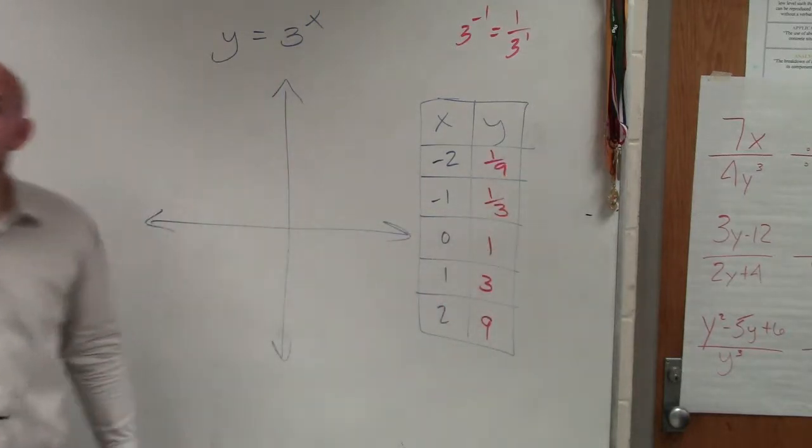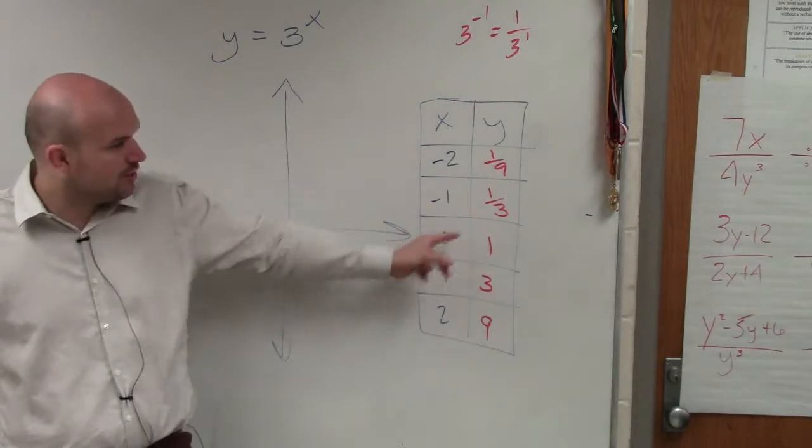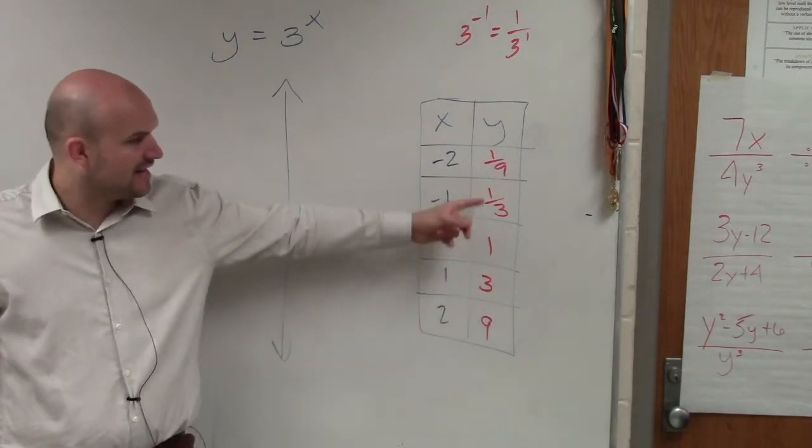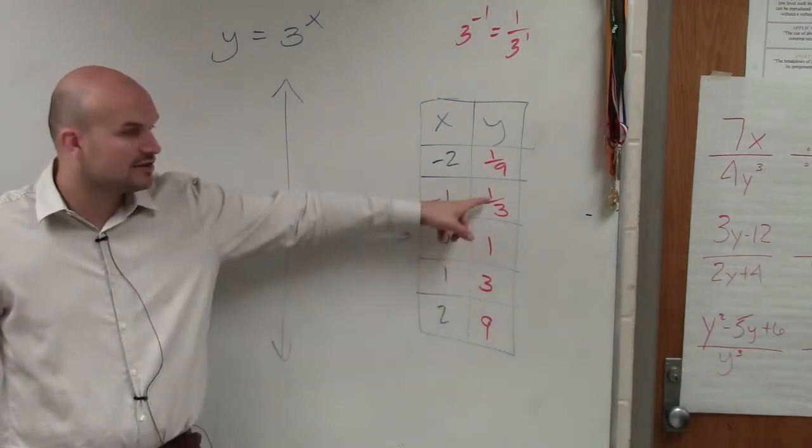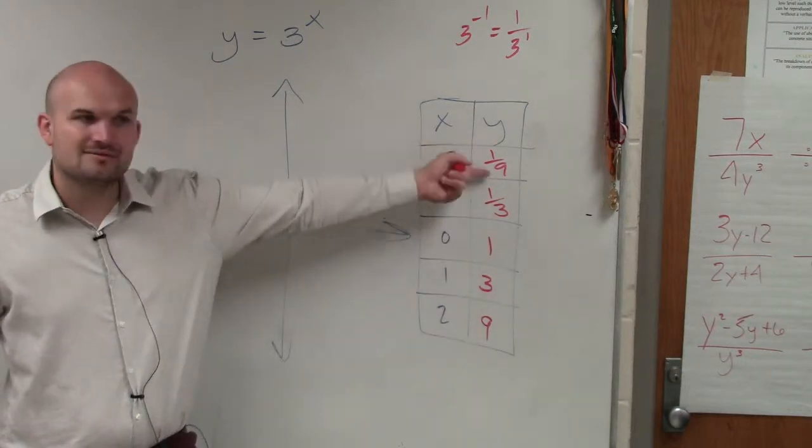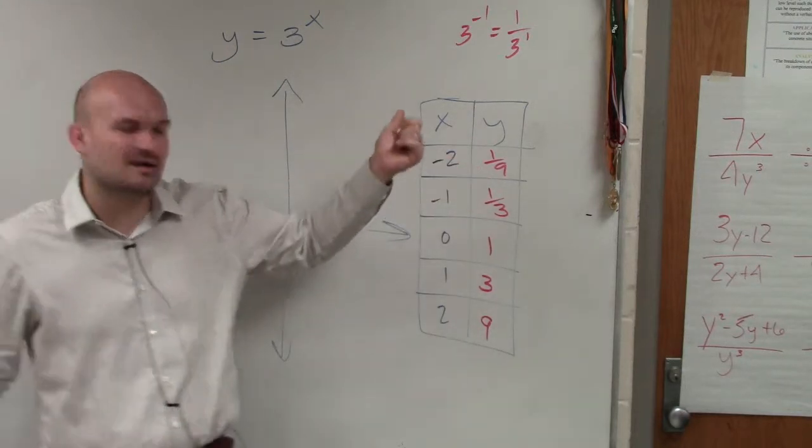Another pattern you guys can see is that 0, 1 is kind of common. And then you go to 3, the reciprocal. 9, the reciprocal. So that's a little pattern I want you guys to see.